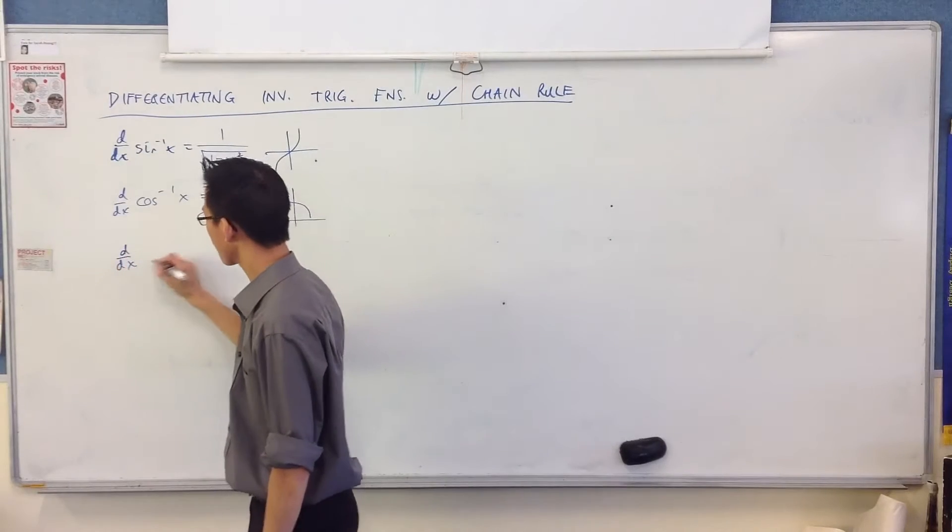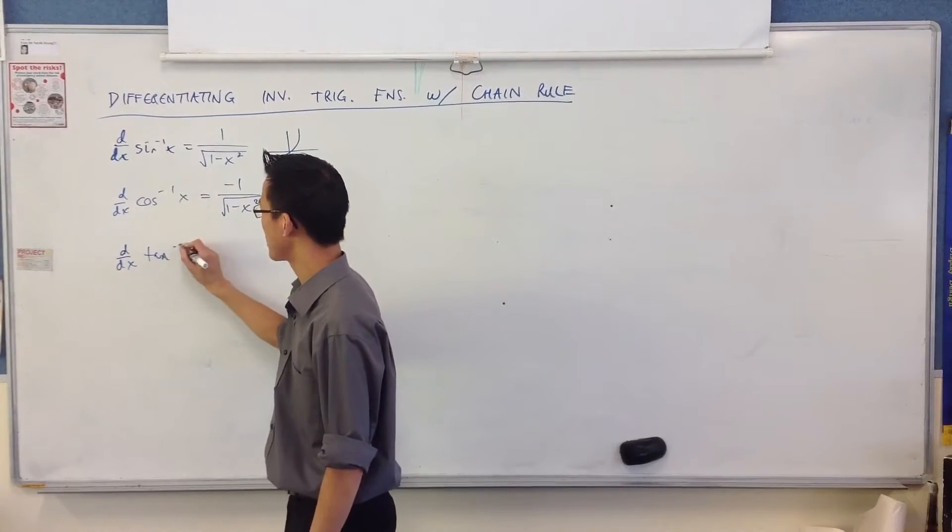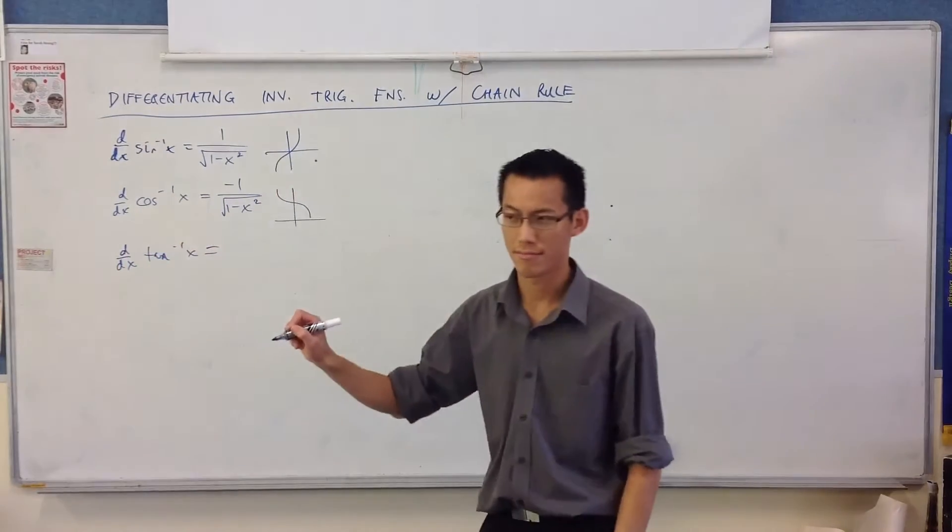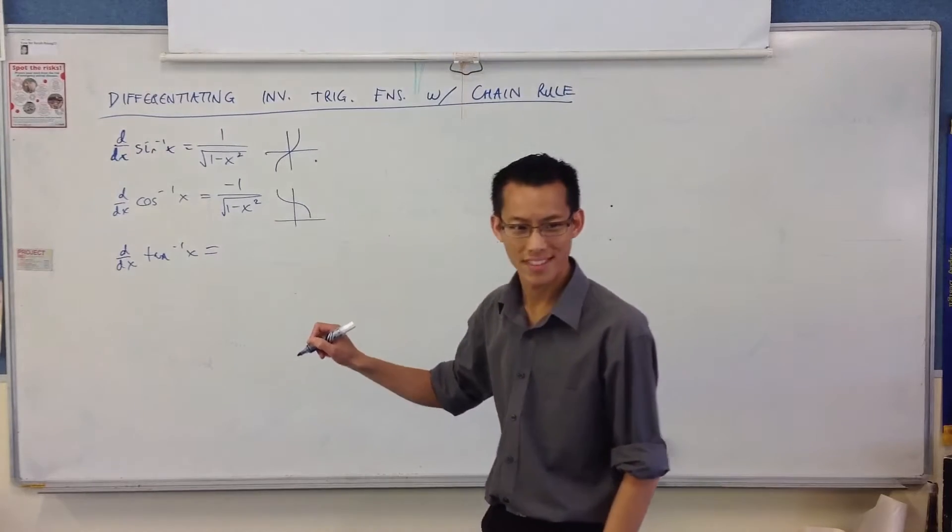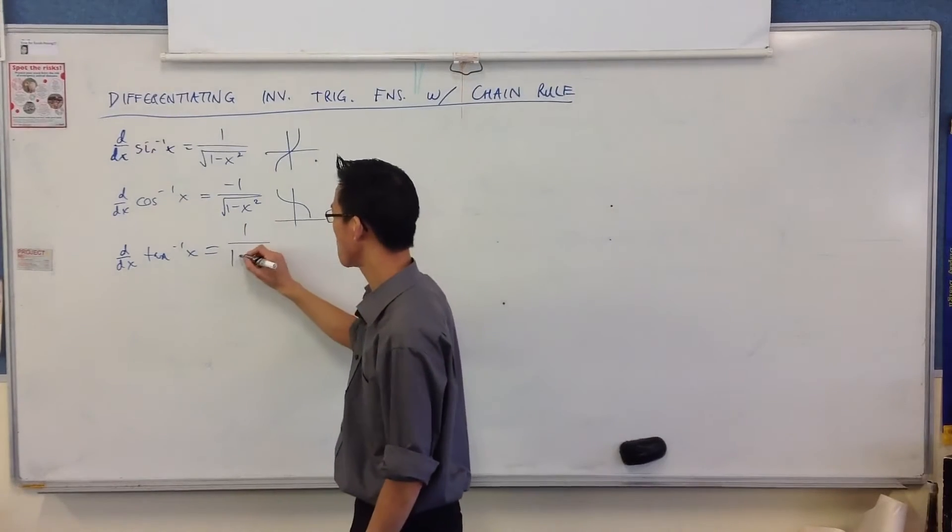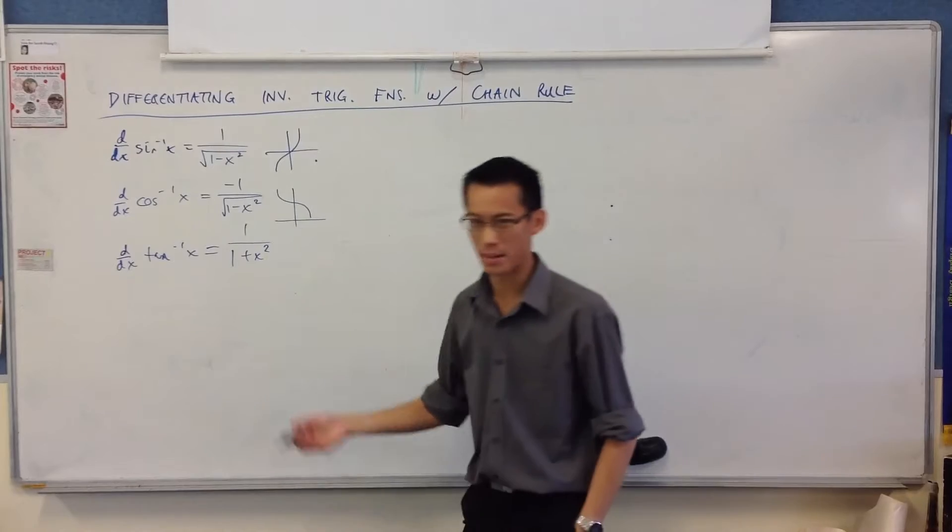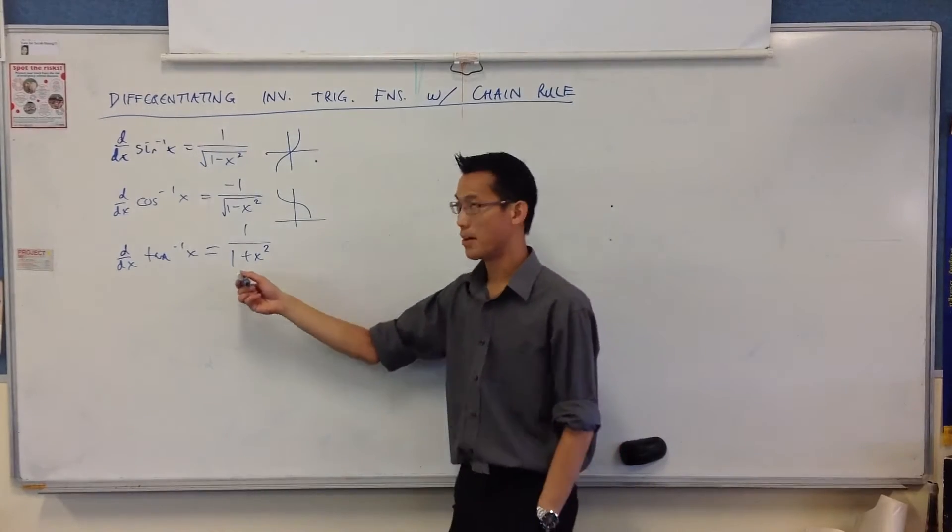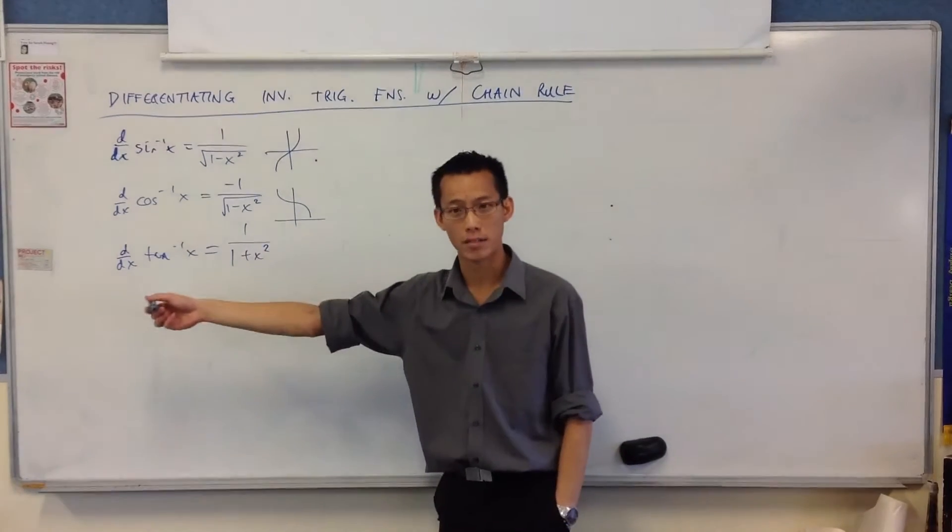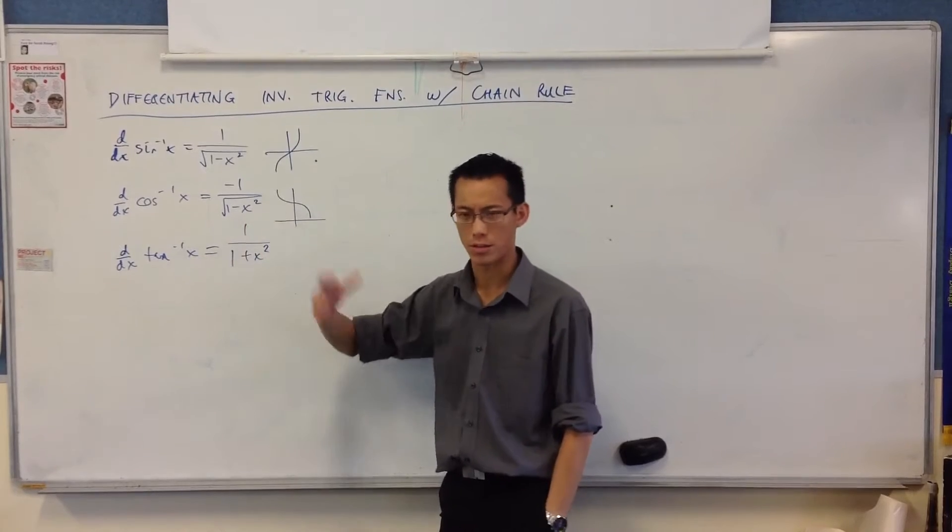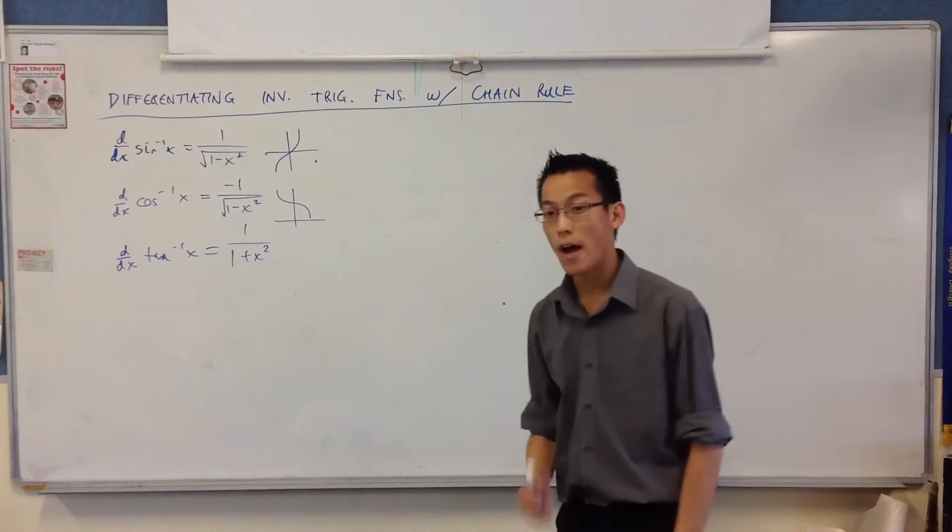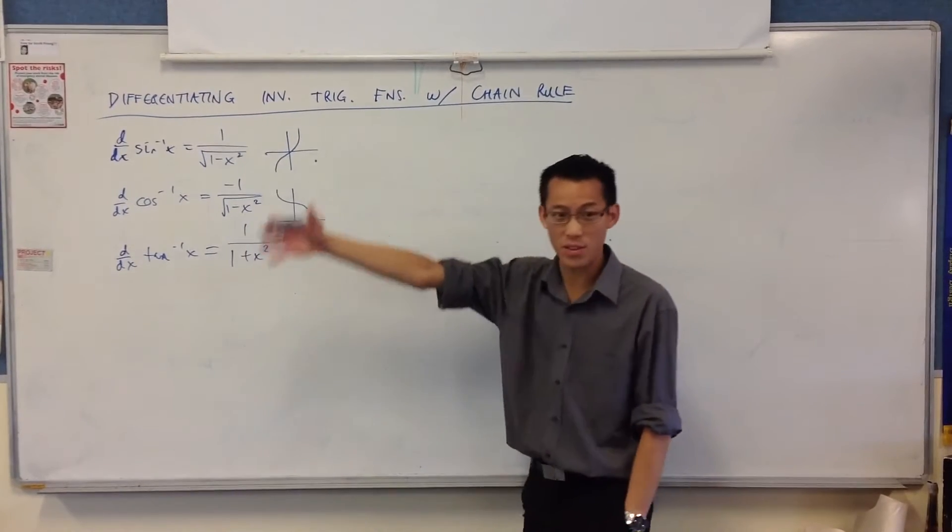And just to complete the set, what's the derivative of tan inverse? Good! No square root, and also on the bottom it's a plus because you used the sec squared plus one identity. Well, tan squared plus one equals sec squared. Right, now, you guys know how to differentiate inverse trig functions.